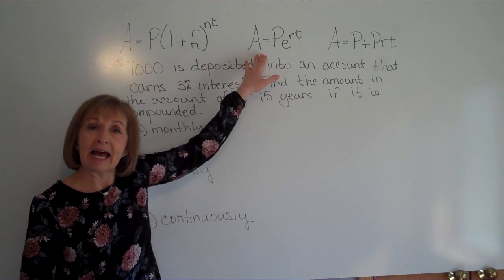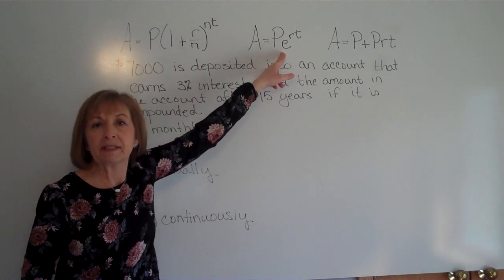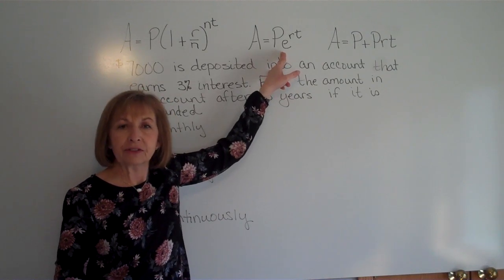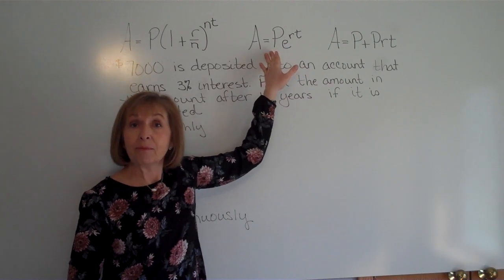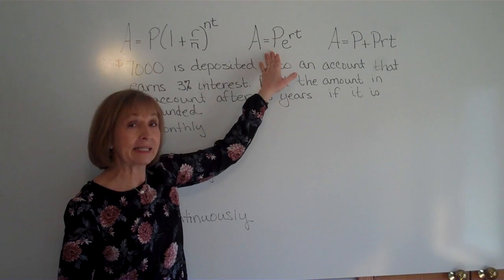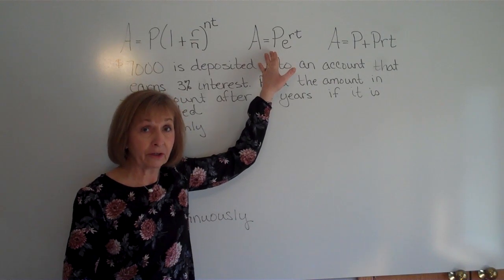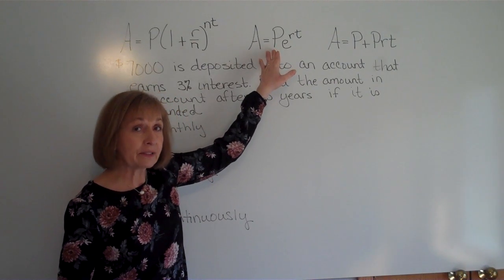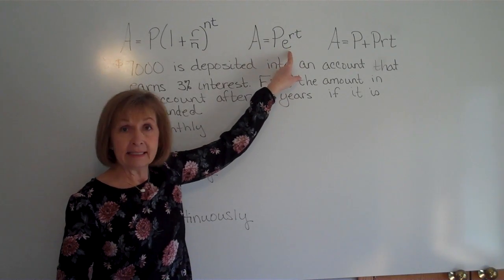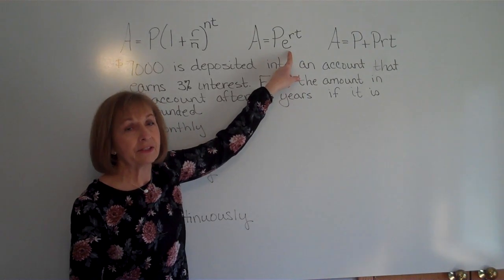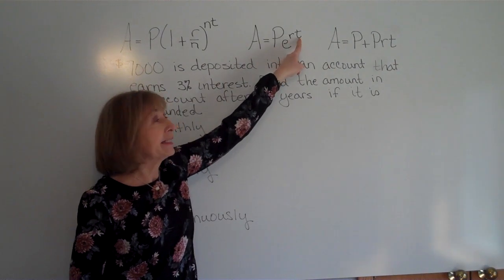The next formula is A equals P times E to the RT, where E is the number 2.71828 and so on. There's a key on your calculator for the E value. This is the compound interest formula for when interest is compounded continuously. P is the principal, R is the interest rate in decimal form, and T is the time in years.